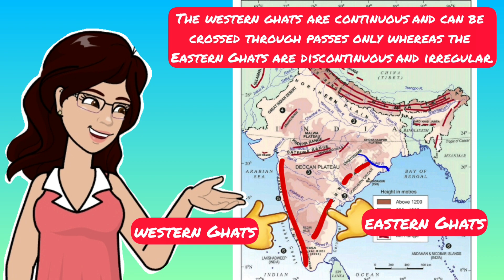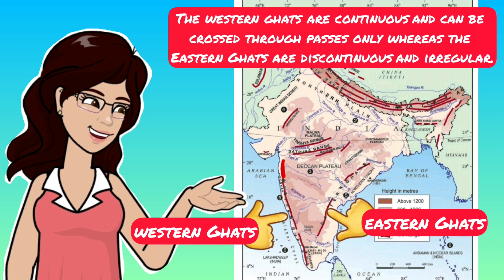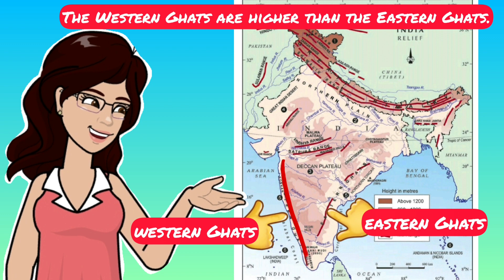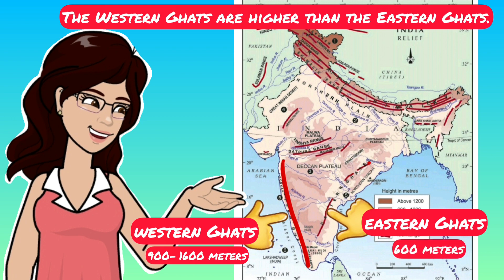Why are the Eastern Ghats discontinuous? Because there are many rivers draining into the Bay of Bengal. These rivers break the Ghats and make their way to enter the Bay of Bengal. Third, the Western Ghats are higher than the Eastern Ghats. The average elevation of the Western Ghats is 900–1600 meters, as against 600 meters of the Eastern Ghats.